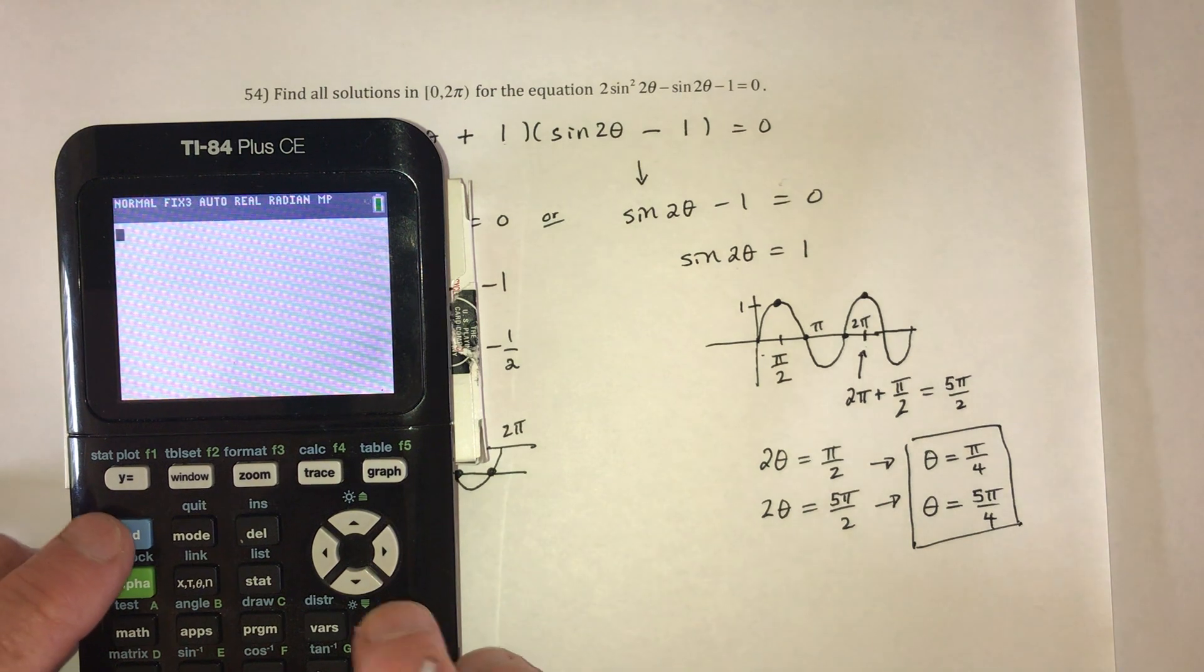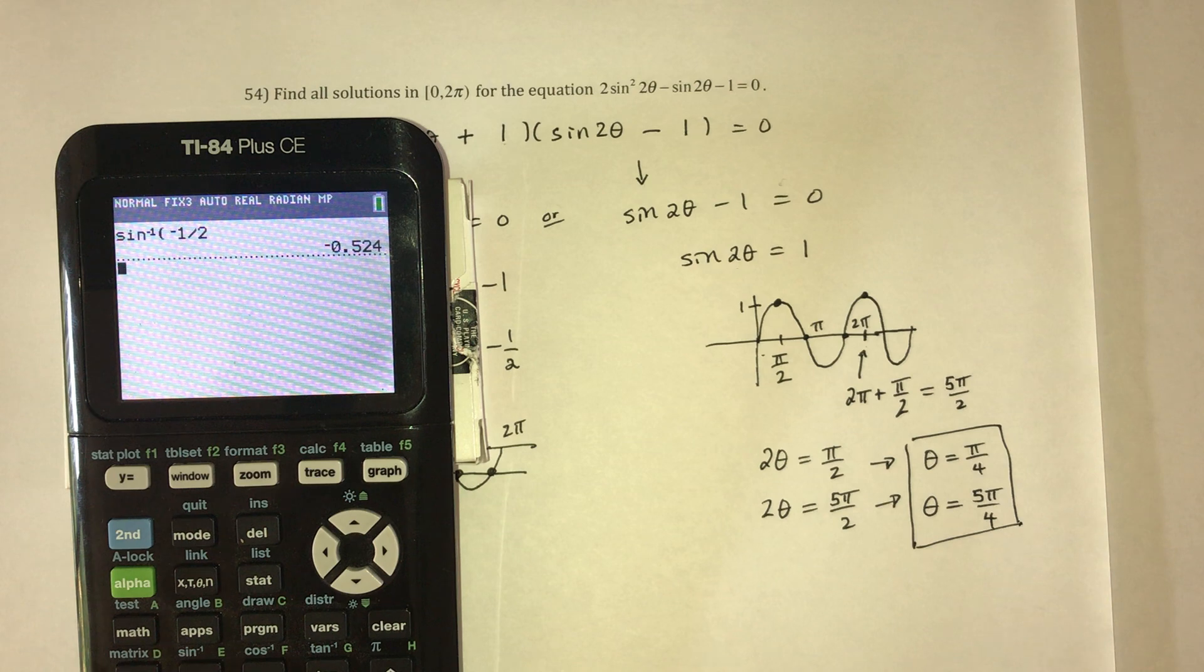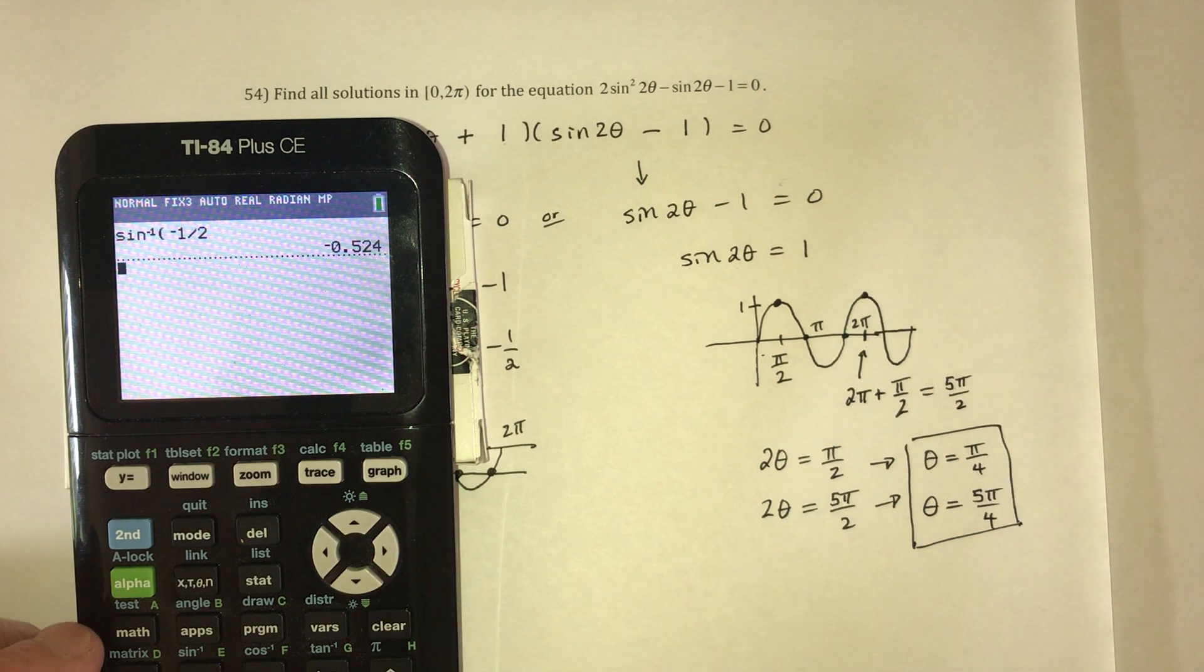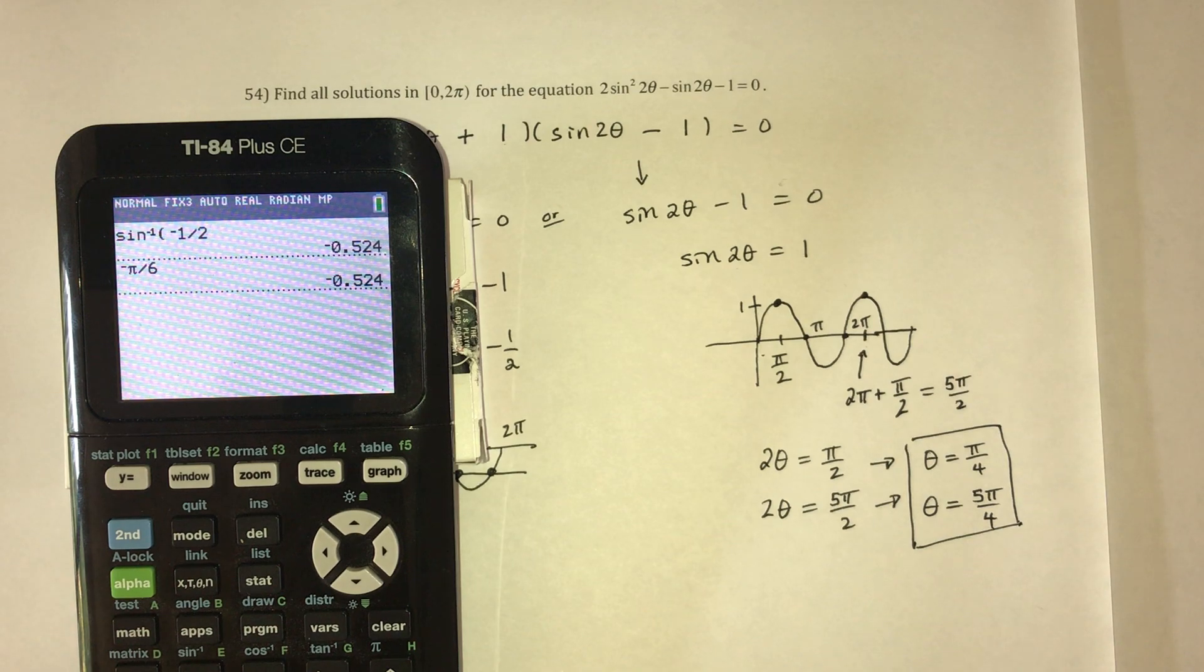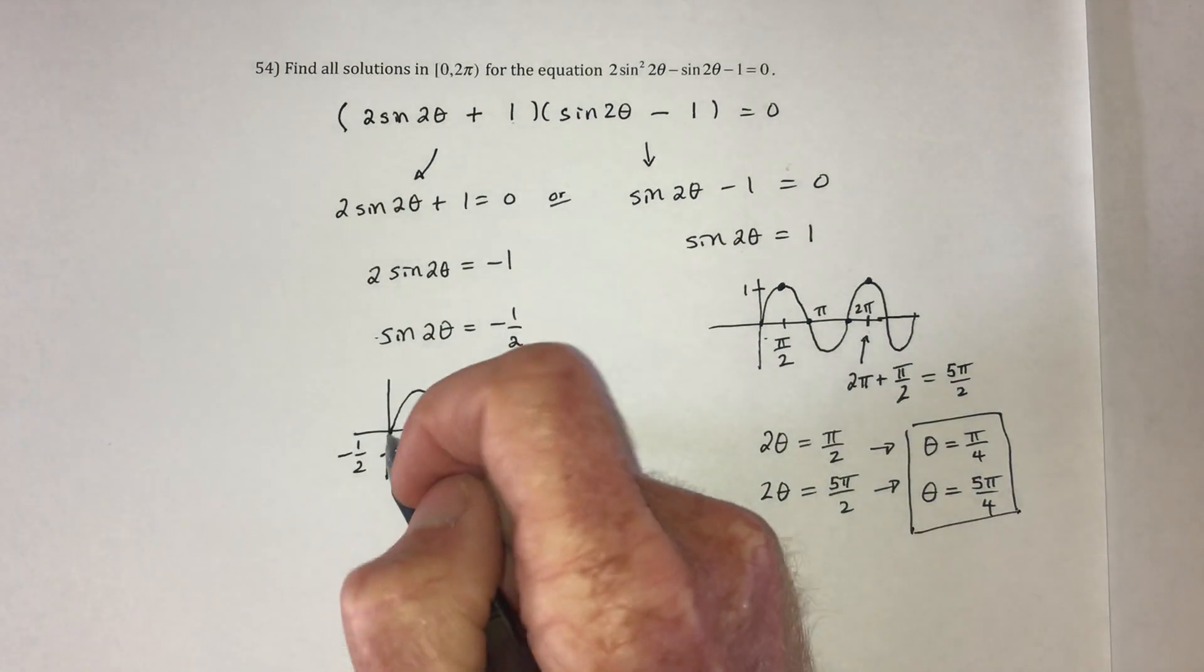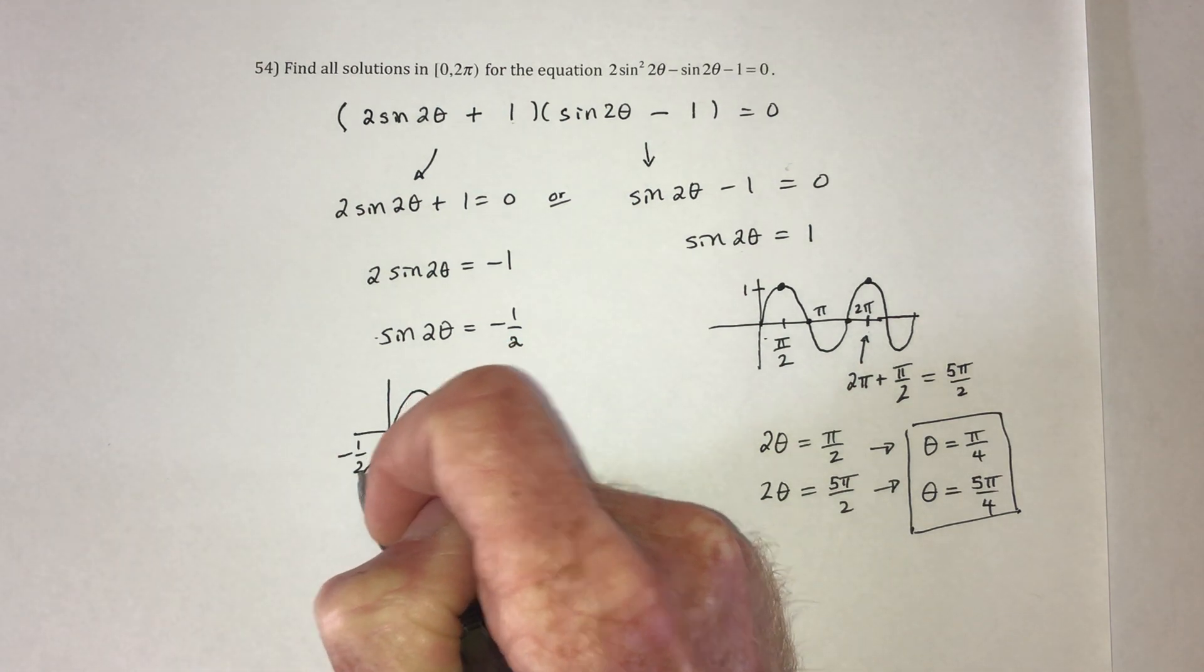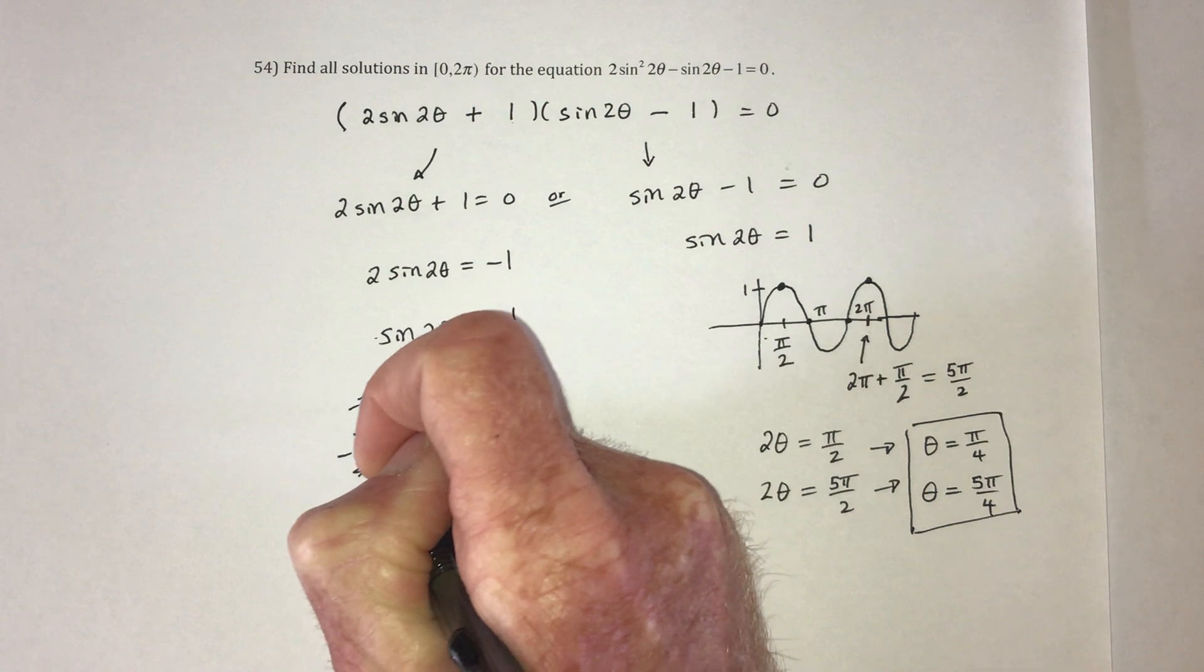So sine inverse of negative 1 half is equal to, so that is negative pi over 6. Negative pi over 6. So that means that the calculator actually went this way, and it found this solution at negative pi over 6.